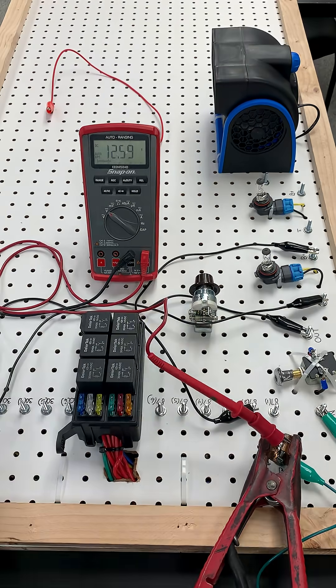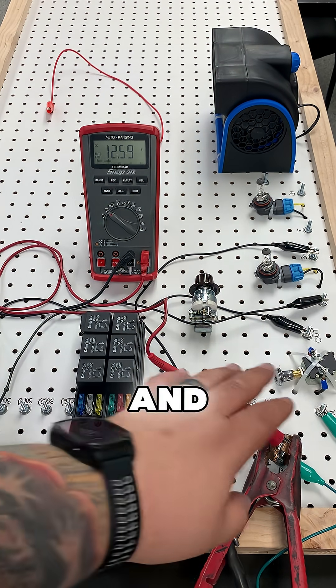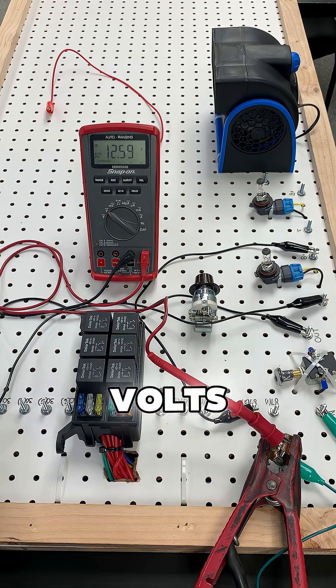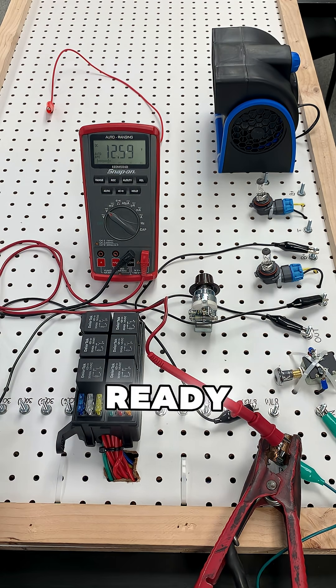Let's take a look. First, we're going to check the power and ground for our electrical circuit. We got 12.59 volts, meaning we have a good electrical circuit and we're ready to test.